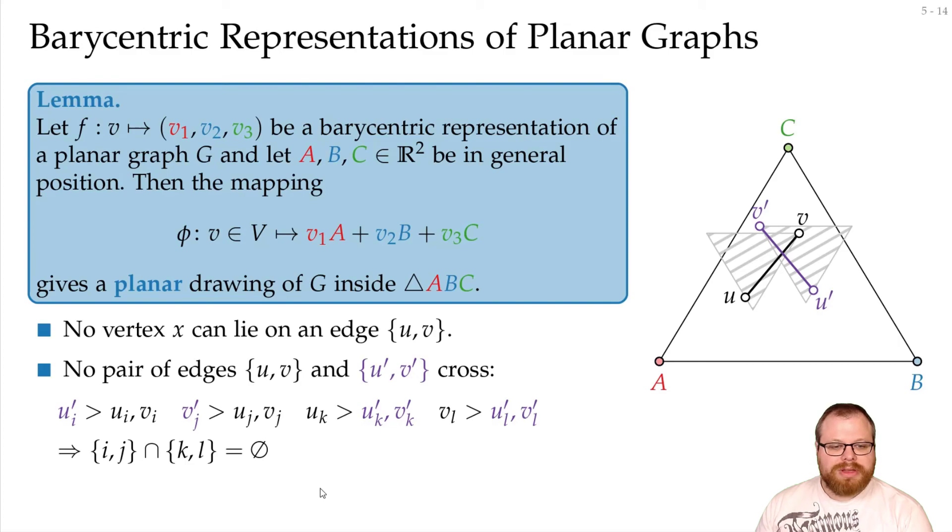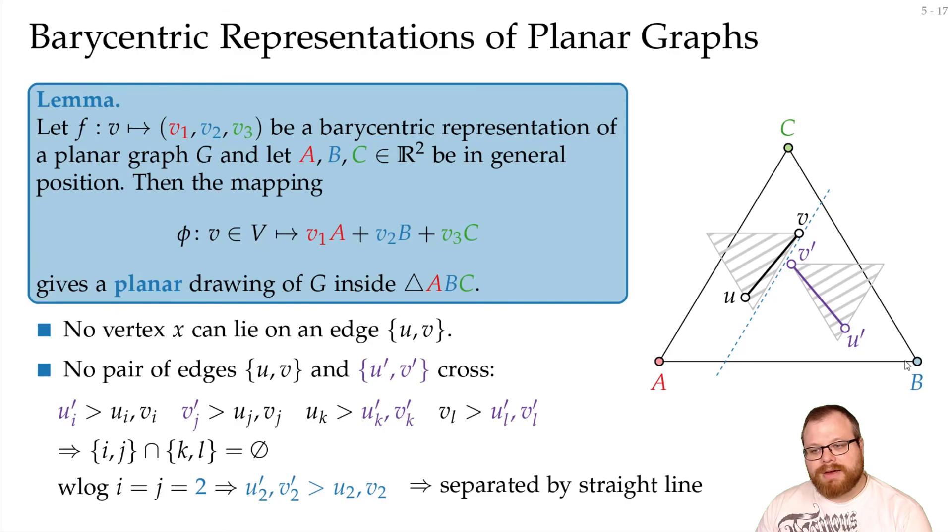So, let's assume without loss of generality that i and j are the same, and that it is a 2. Then, we get from this formula that u_2 prime and v_2 prime are larger than u_2 and v_2. But what does that mean here? That means that if we take the parallel line through v here, then both of them have to lie on this side. So, they are separated by a straight line, and that means that they cannot cross each other.